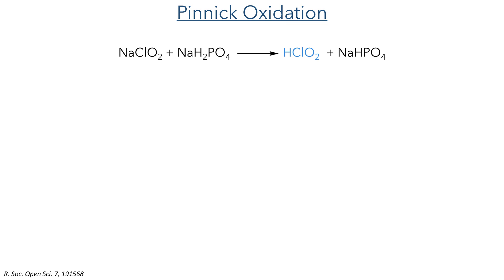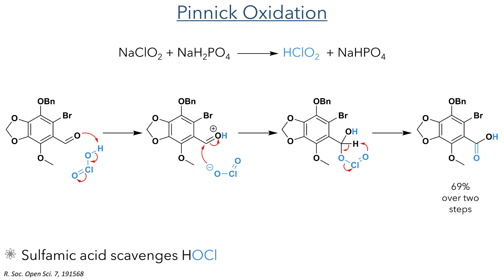This was taken forward without purification and subjected to a Pinnick oxidation. Chlorous acid was produced by the reaction of sodium chlorite with sodium dihydrogen phosphate, and this first protonates the aldehyde. The resulting oxonium ion is then attacked by chlorite, forming a hemiacetal-type intermediate. A hydrogen is then abstracted, oxidizing the molecule to a carboxylic acid and eliminating hypochlorous acid, which is scavenged by sulfamic acid as it can inhibit the reaction if present in stoichiometric quantities.